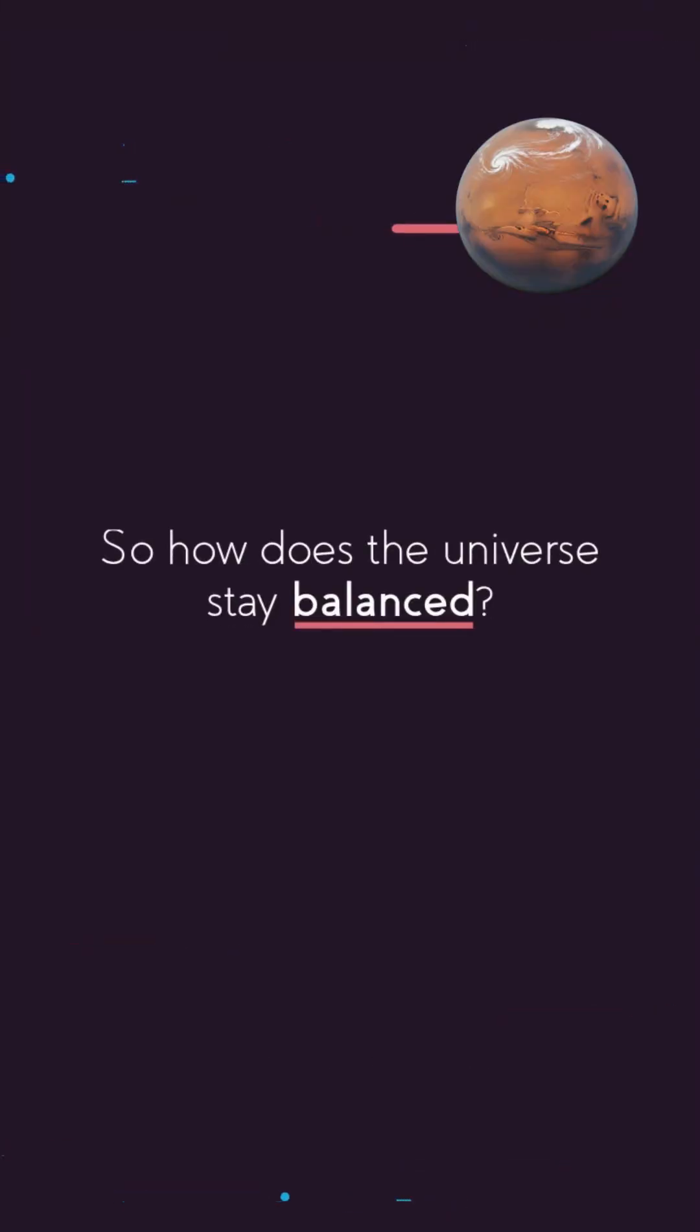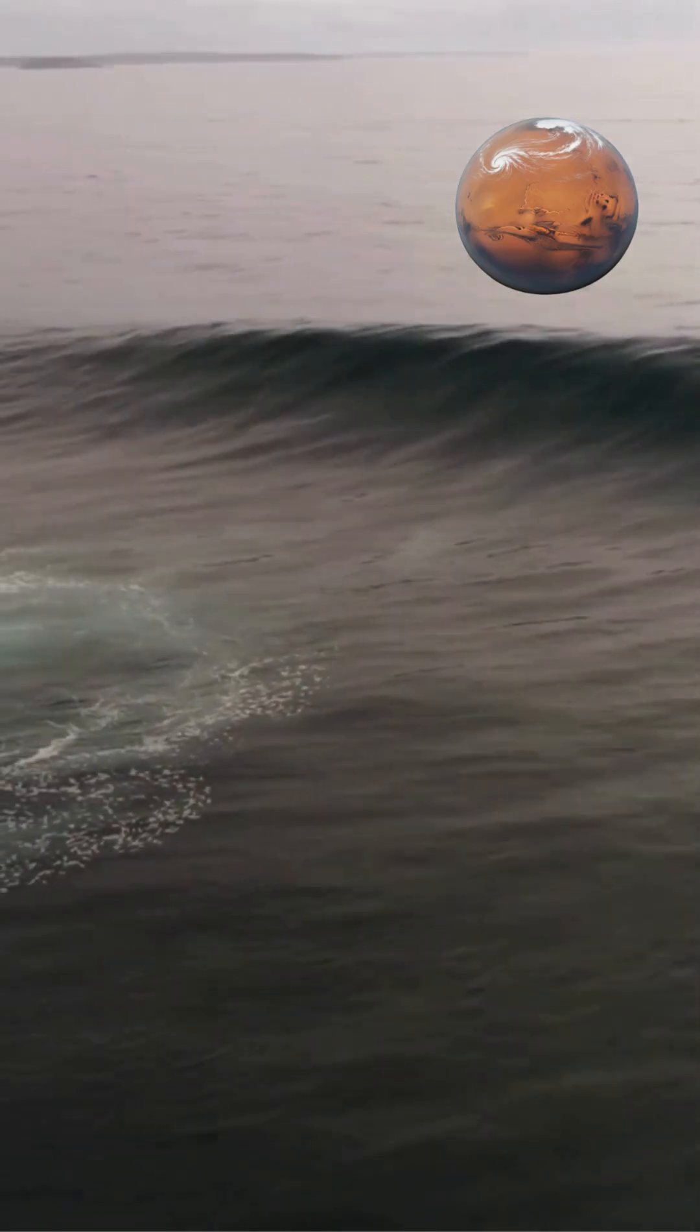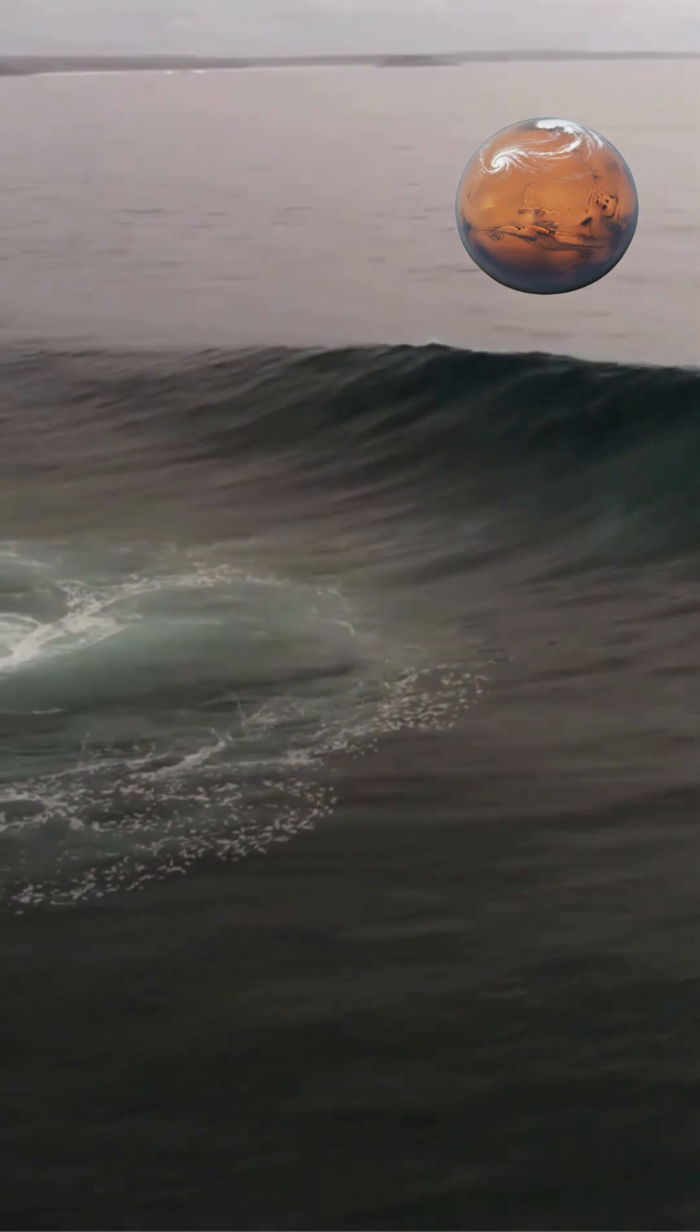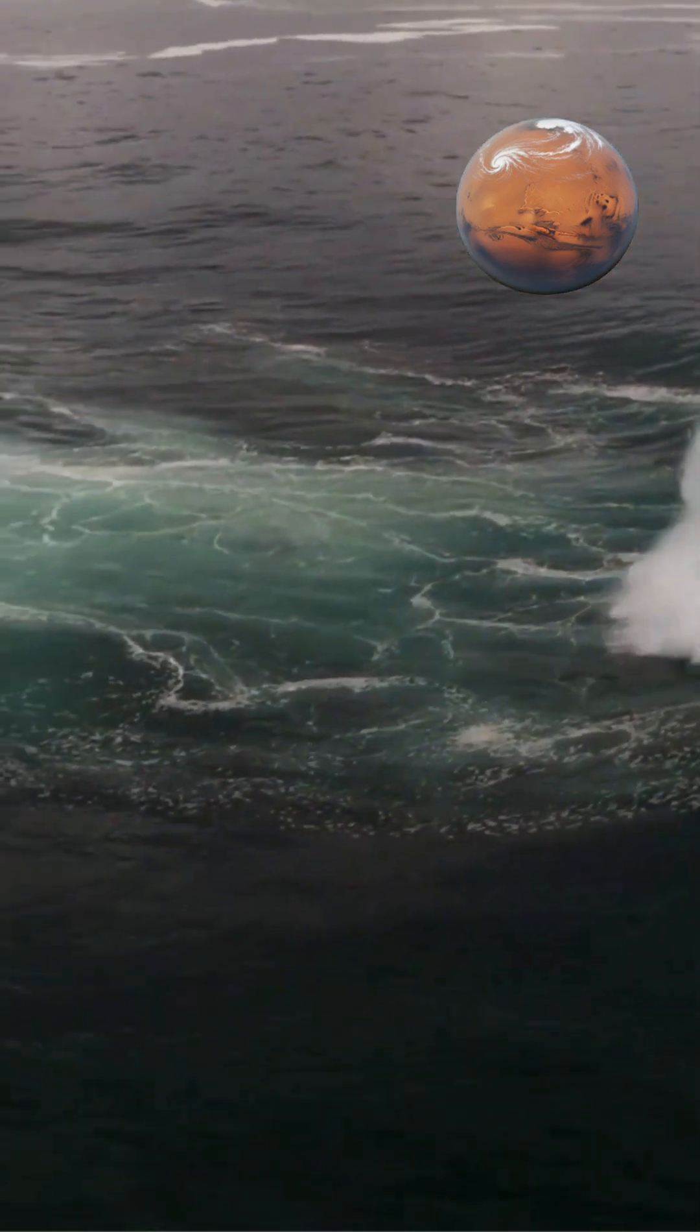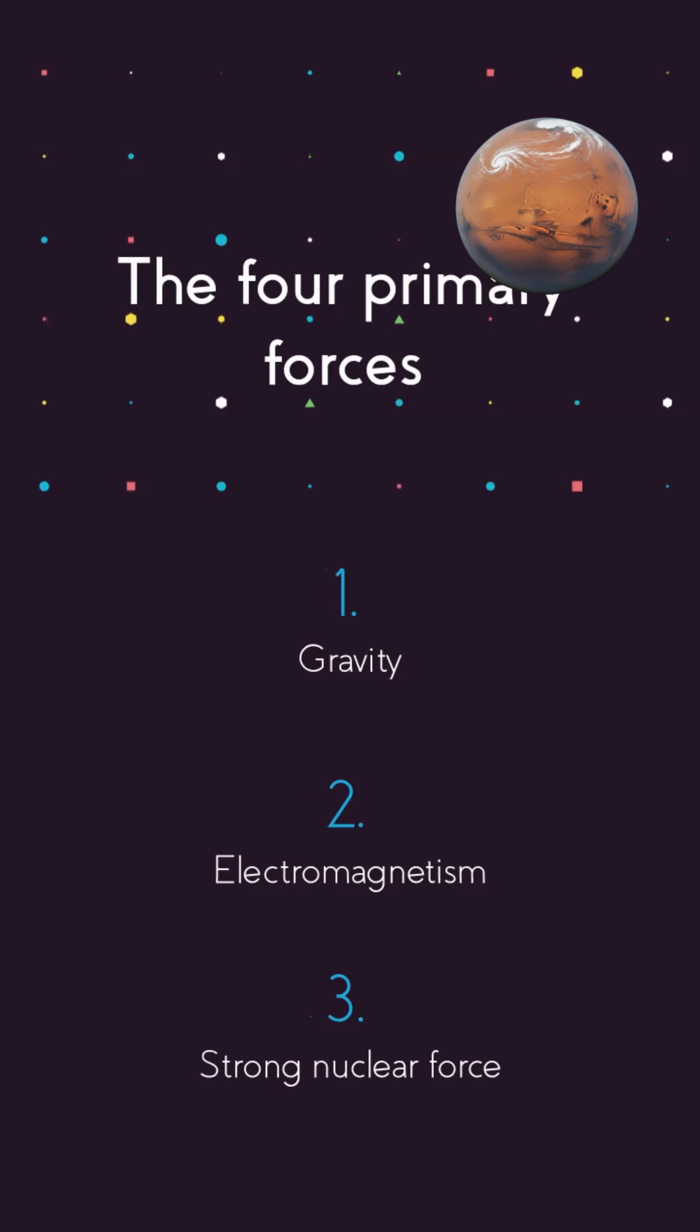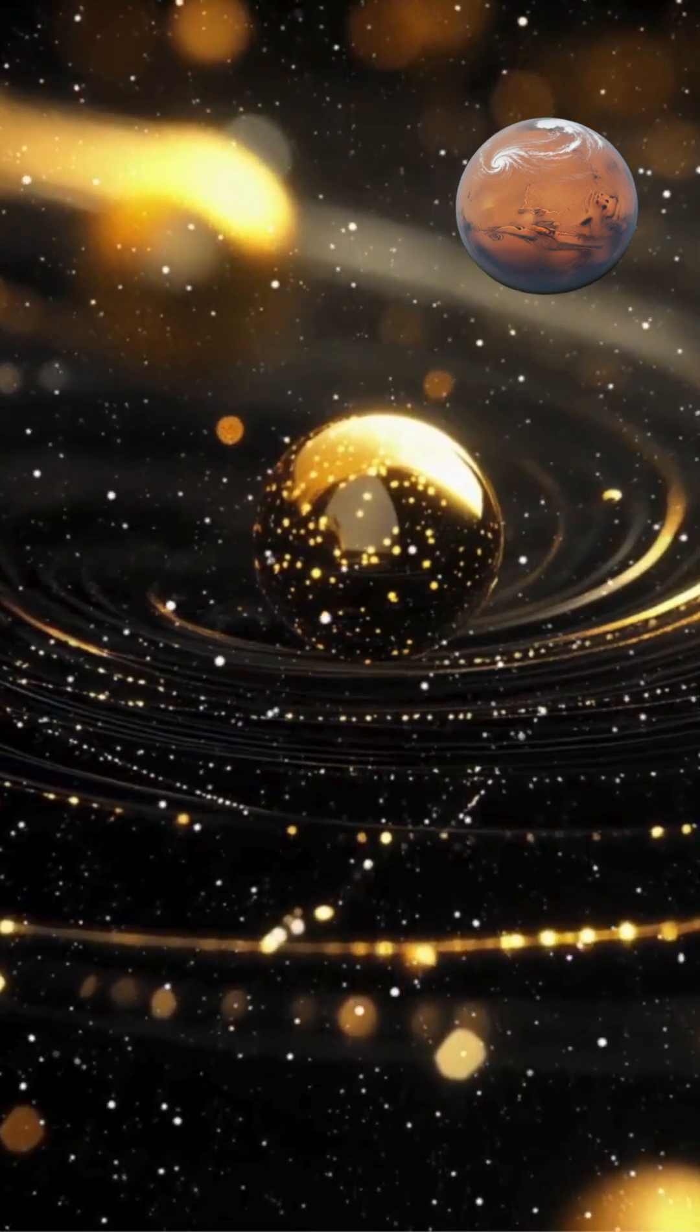So how does the universe stay balanced? At its core, cosmic balance is maintained through a delicate interplay of fundamental forces and physical laws. The four primary forces—gravity, electromagnetism, the strong nuclear force, and the weak nuclear force—govern every interaction in the universe.